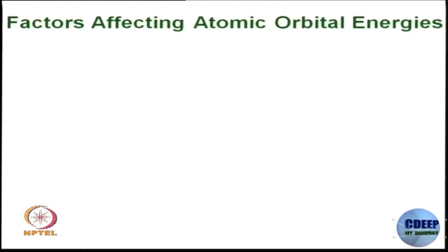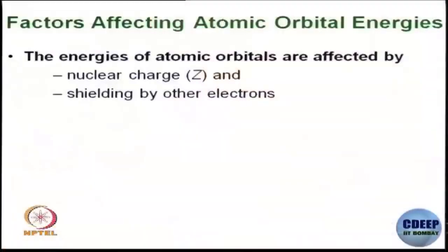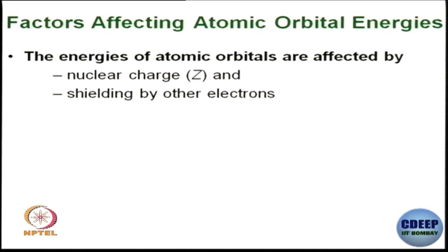The factors that affect atomic orbital energies is something we need to understand before we try to understand the periodic table. By principal quantum number: 1s has lower energy than 2s than 3s and 4s, and 2p has lower energy than 3p, 4p, 5p. But there are a few factors we need to understand in detail. Atomic orbital energies are mainly affected by nuclear charge — that is the atomic number — and shielding by other electrons.